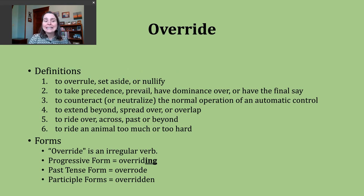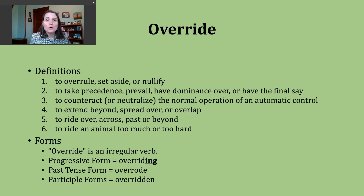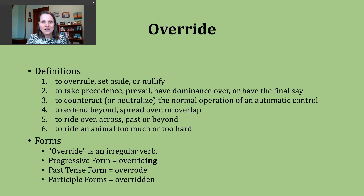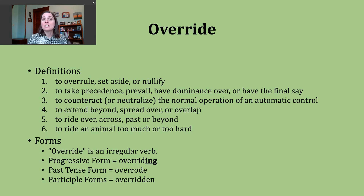The first way the verb override gets used is to mean to overrule, set aside, or nullify. If you're a regular watcher of my videos, you might notice that I use a lot of examples from politics and law. The way the U.S. government works, our legislature can pass a law, but then it needs to be signed by the president. But if the president does not sign it, it can go back to Congress. They can vote, and if they secure two thirds of a majority, then we say they override the president's veto, or the refusal to sign. So that first definition is used quite a lot as we talk about things becoming law here in the United States.